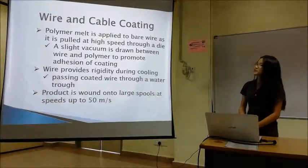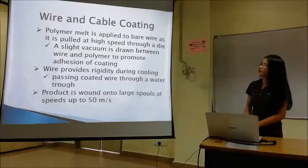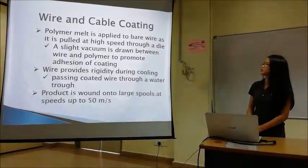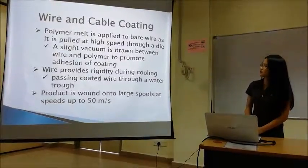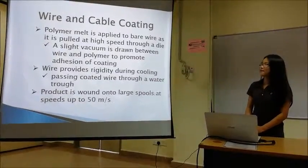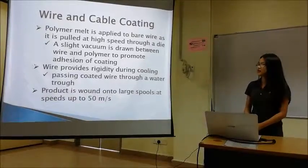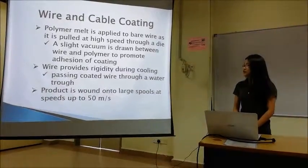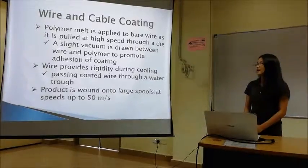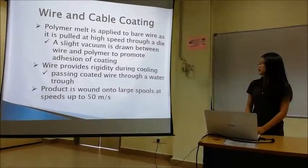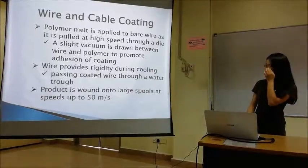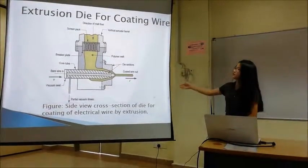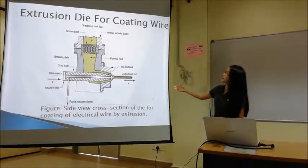The last type is wire and cable coating. Polymer melt is applied to bare wire and it is fed at high speed to a die. A sliding vacuum is drawn between wire and polymer to promote good adhesion of the coating. The wire provides rigidity during cooling by passing through cold water in a water trough. This is the figure for wire coating.